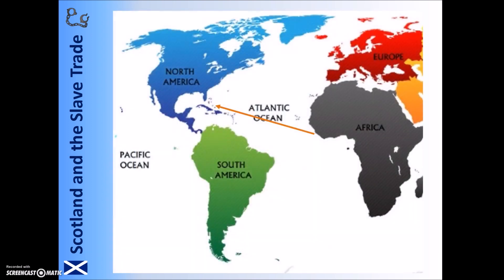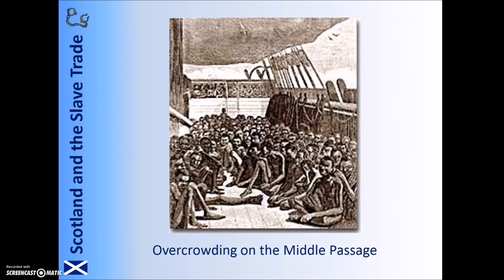During the second stage of the journey, also known as the Middle Passage, the Africans were transported across the Atlantic to their new homes in the Americas, including locations such as the Caribbean, United States, and Brazil. The Middle Passage saw Africans endure terrible conditions, including overcrowding, violence, and even rape. Many of them would die before they ever reached the Americas.